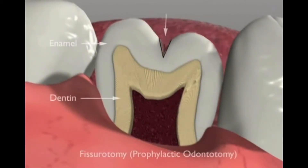Fissurotomy, or prophylactic odontotomy, involves funneling the grooves open with a cone-shaped dental burr. If done early enough in grooves that do not extend through the dentin layer, it may be possible to perform this procedure and nothing further.